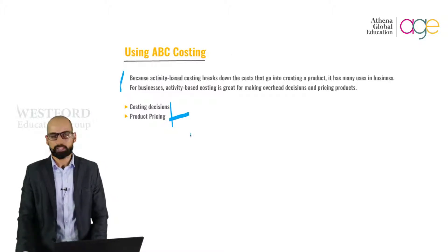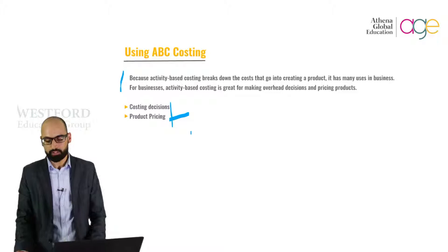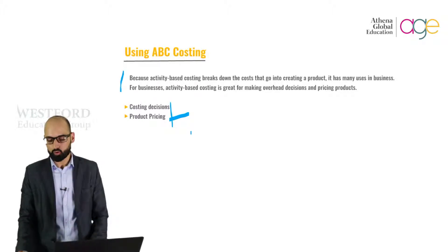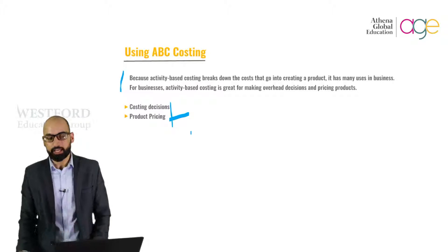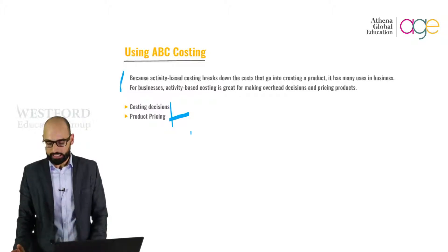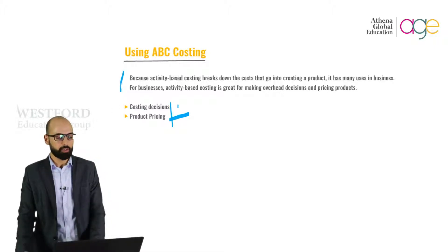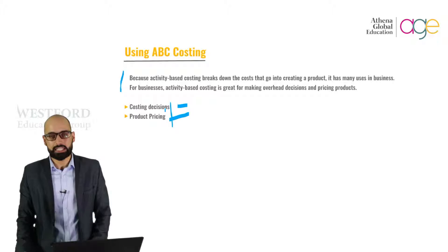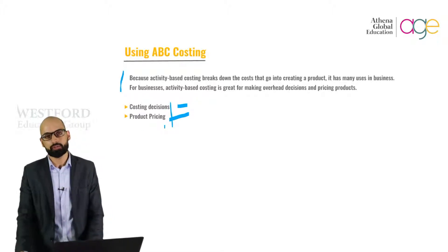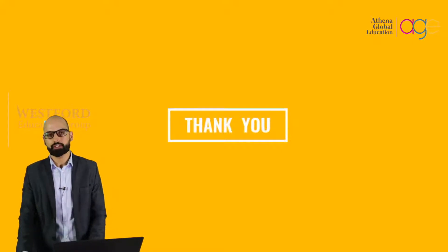Activity-based costing also helps in pricing products. The specific allocation of costs helps you set prices that produce a healthy profit margin. If you only know which direct costs go into your products, you are ignoring other costs that would reduce your profit margins. With an ABC system, you can assign costs to each activity in the production process, allowing you to more accurately set a price. These are the two important implications of ABC: supporting management decisions on costing and pricing. Hope you have enjoyed the session, thank you very much.